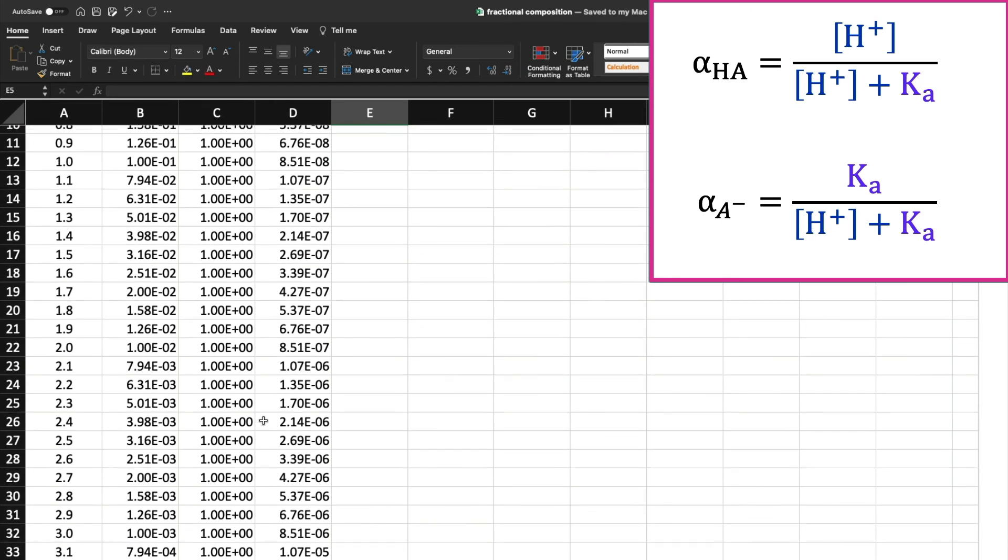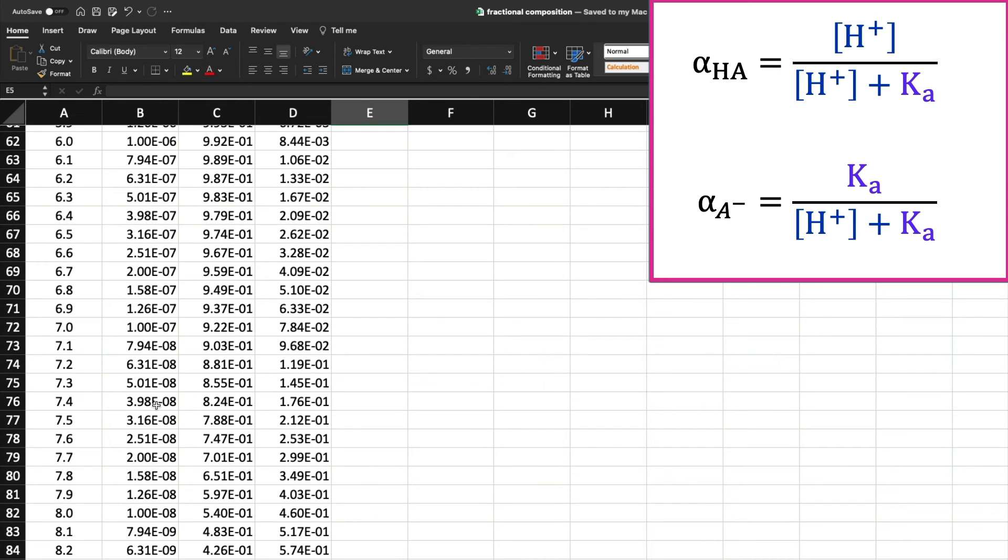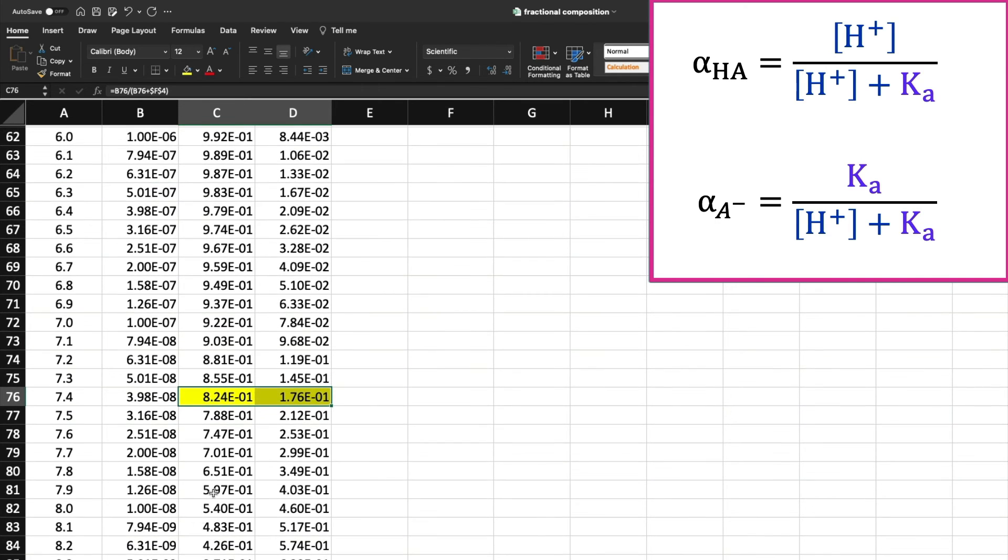As always, it's good to double-check the answer on at least one cell to make sure you didn't put in your formula wrong. So I'm going to scroll down to pH 7.4 and pH 8.1 to double-check my answers. Now that I'm sure I got the formulas right, let's look at the graph.